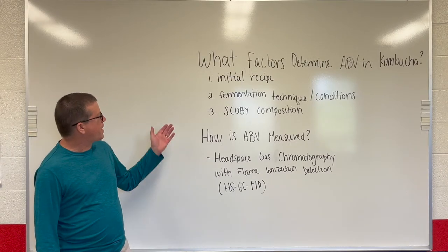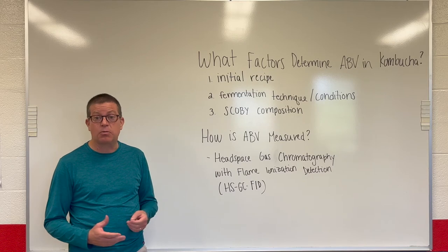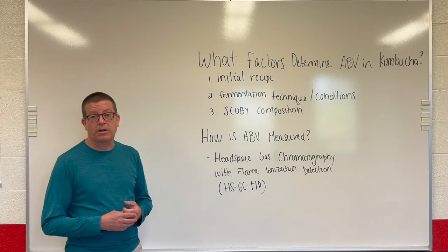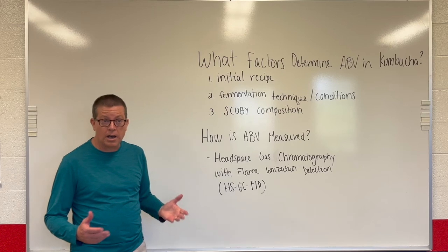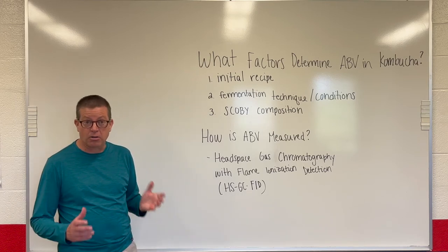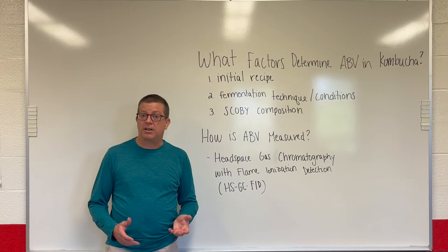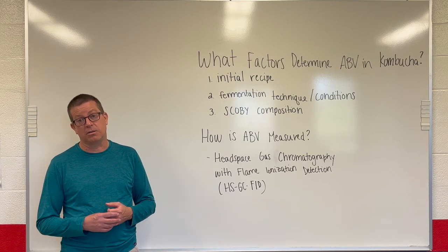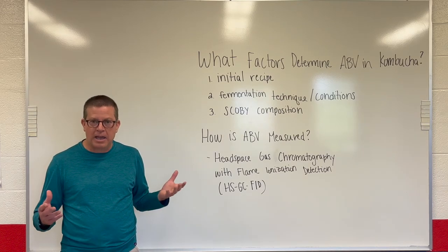What factors determine ABV values in kombucha — why might one kombucha measure 2.3% ABV while another measures 1.5%? There are a number of factors. First is the initial recipe the brewer chooses. Second is the fermentation technique or conditions of fermentation. And third — a big one — is the composition or balance of the SCOBY. A well-balanced SCOBY should help regulate ABV in kombucha, based on how ethanol is both produced and consumed in the fermentation process.